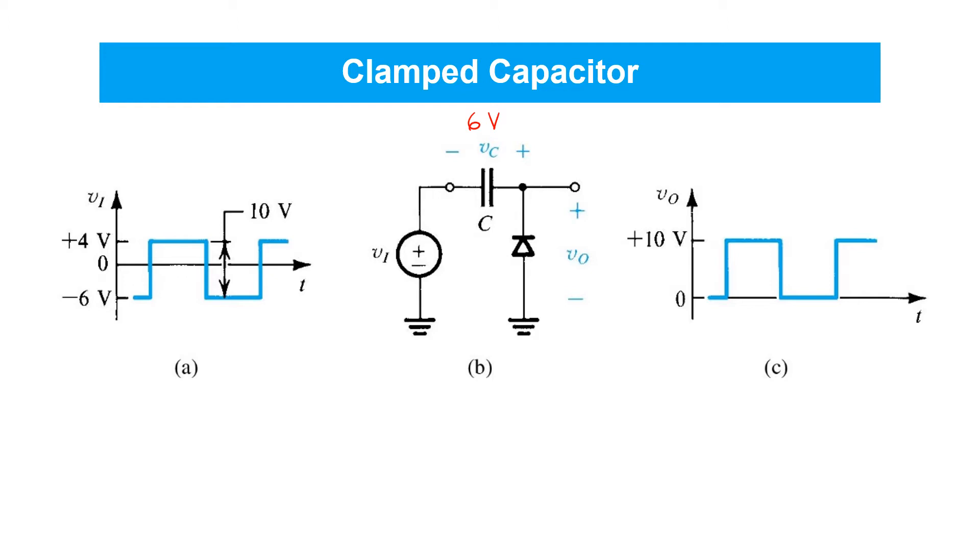The output voltage vo would then simply be equal to vi plus vc. And indeed that's exactly what you see at the output. You see the input waveform shown on the left shifted up by 6 volts so that the negative most peaks become 0, and depending on the peak to peak amplitude that appears at vi, we see that same peak to peak amplitude at the output but shifted up. So in this case the peaks get shifted up to plus 10 volts.